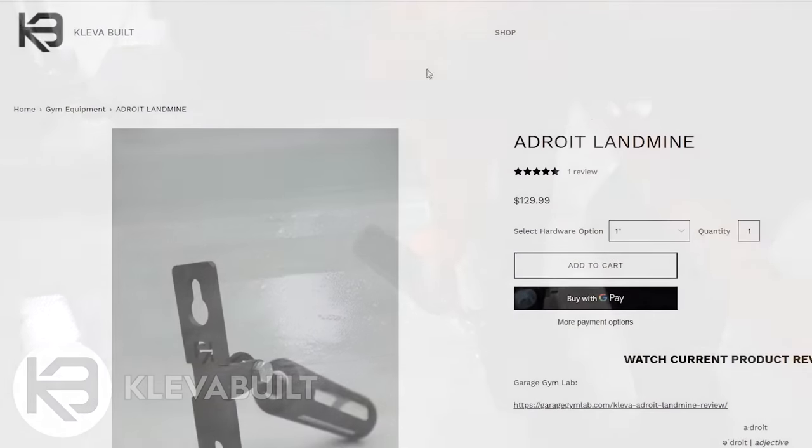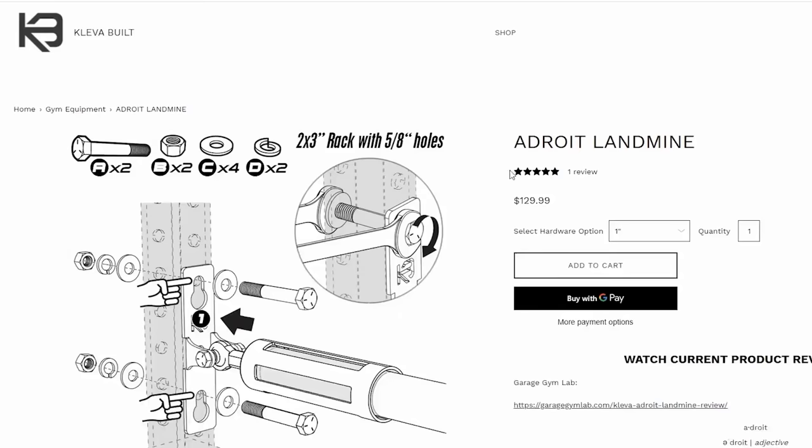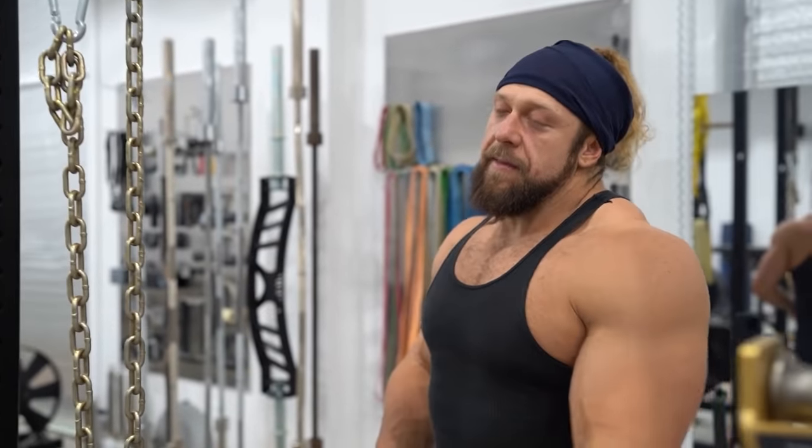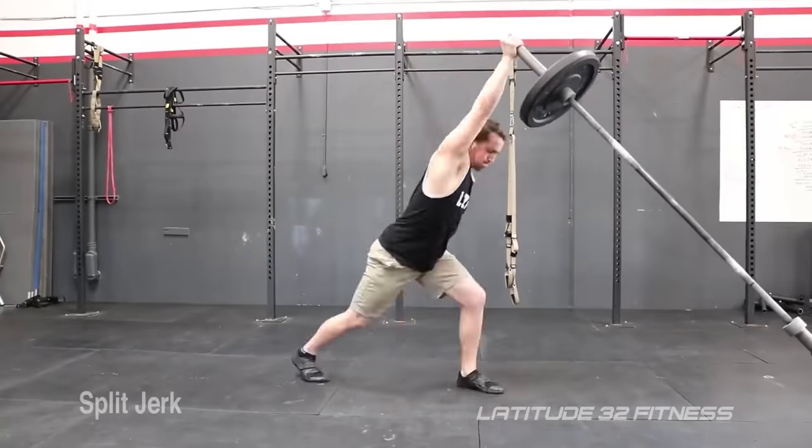This is the Adroit Landmine from Clevabilt. And this is the best landmine you can get. You can attach it horizontal or vertically to a wall, to a rack, any hole spacing. With a landmine, you can do a crazy number of exercises. So, that is another thing that you want to put on your list if you're a home gym owner.